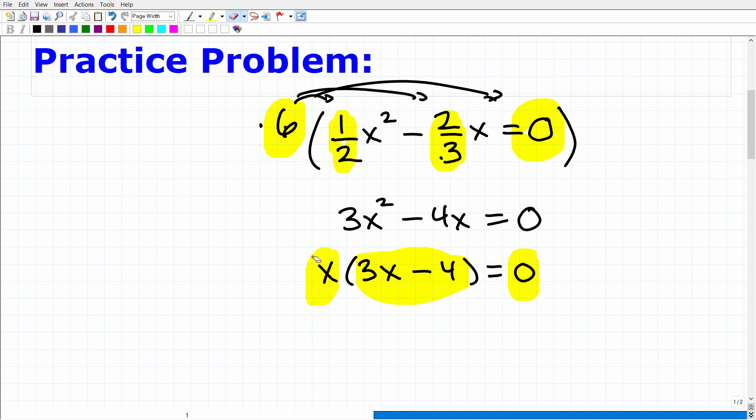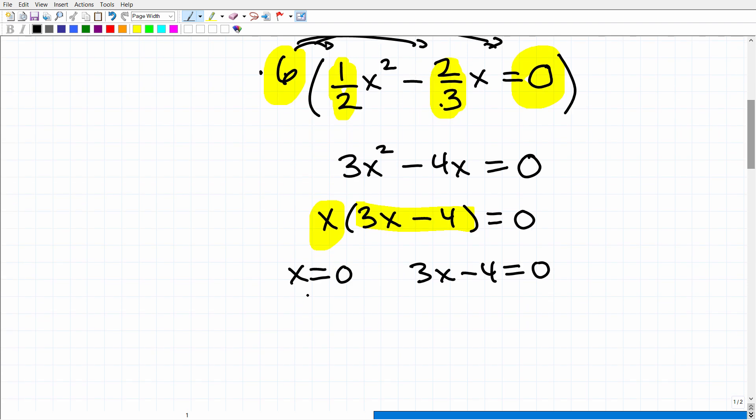We have factors, a product that's equal to zero. What we end up doing is just simply set each factor equal to zero. One or both of these factors has to be zero. And let's go ahead and do that now. So x equals zero, and three x minus four equals zero. We already have one solution. That's x is equal to zero.